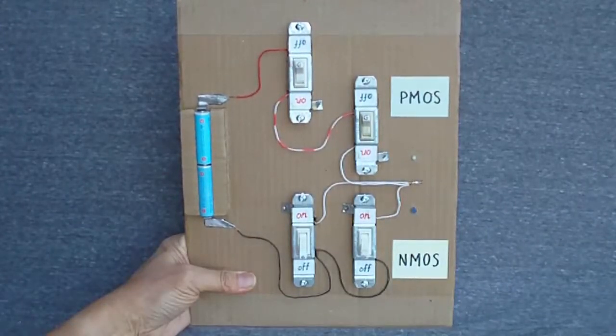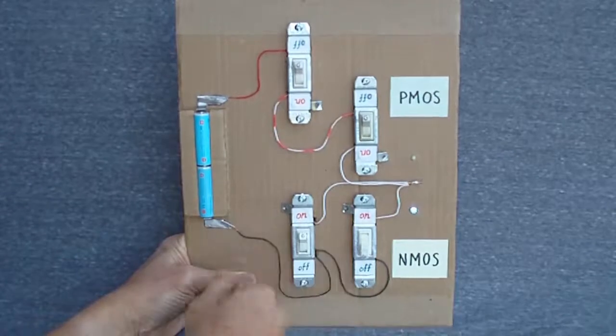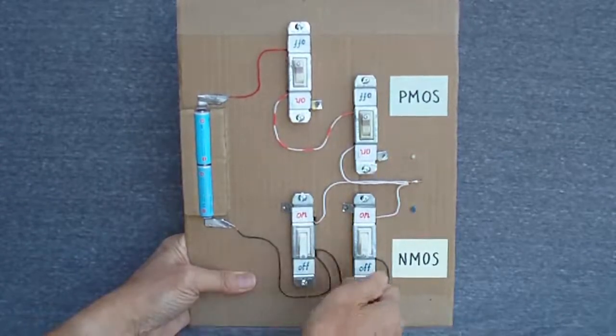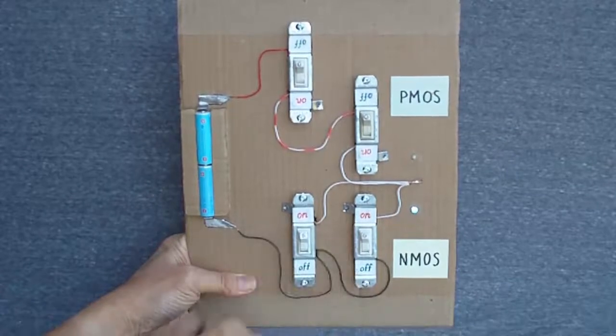Right now all four transistors are off. To get a low voltage or logic zero on the output, I can turn on either one of the two NMOS transistors, or both. To make the output float, I must turn off both transistors.